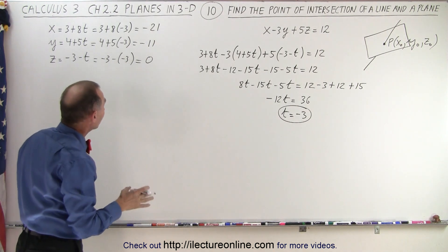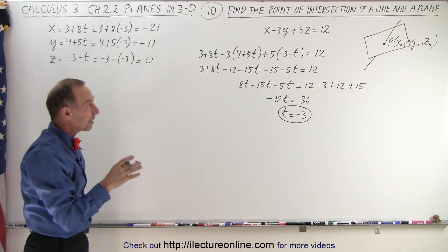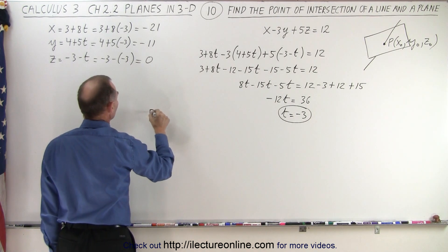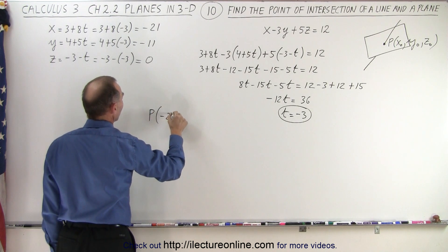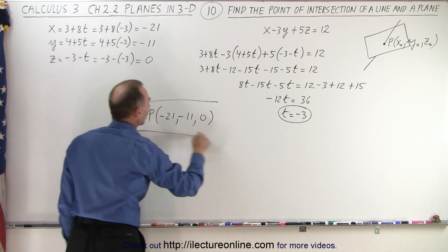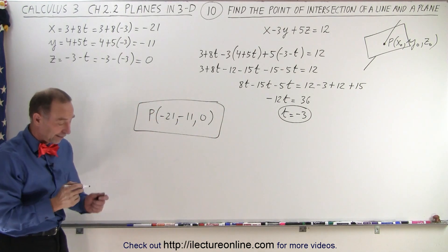So those are the coordinates x, y, and z of the point where the line matches the plane, in other words where it intersects the plane. And so the point of intersection therefore becomes minus 21, minus 11, and 0. And that's where the line cuts through the plane. And that is how it's done.